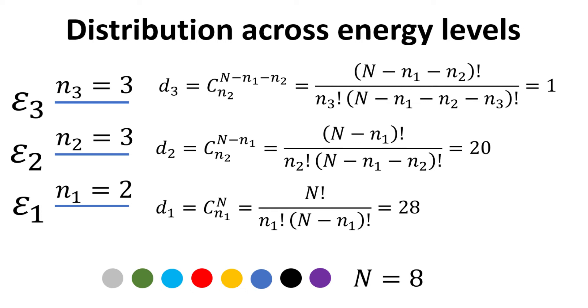For the first energy level, the number of different combinations of choosing n1 equals to 2 particles out of a total of n equals to 8 particles is given by n factorial divided by n1 factorial times n minus n1 factorial, and we denote this combination as d1.